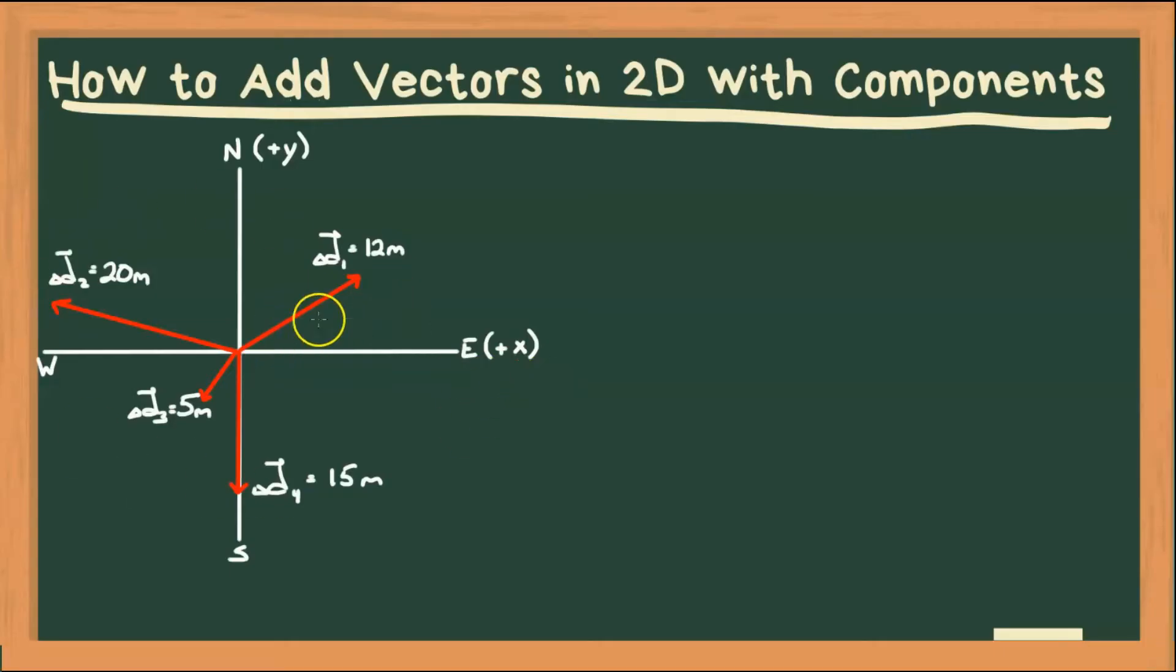So what I have here is I have four different vectors, four different displacement vectors, and we're going to add them all. But before we get started with this, let's look at what components actually are.